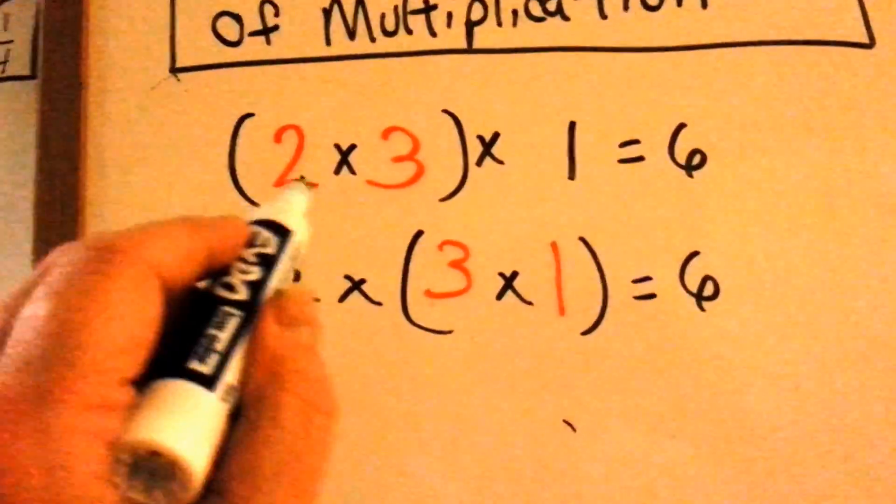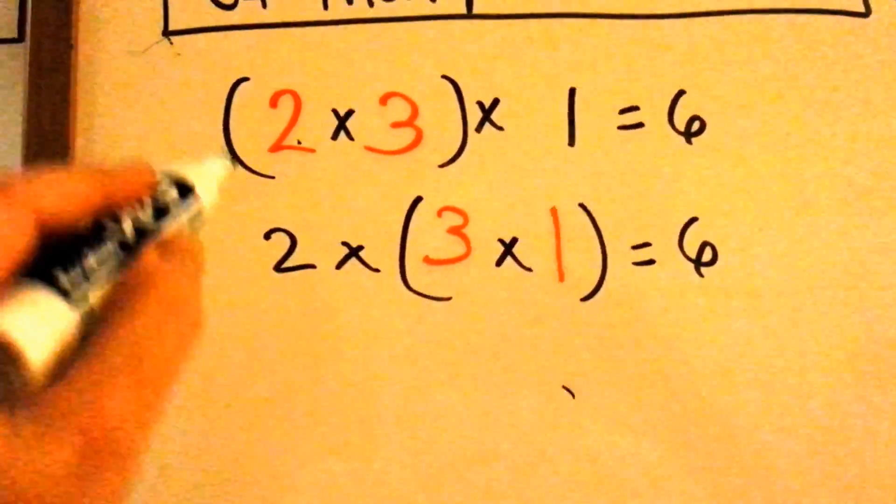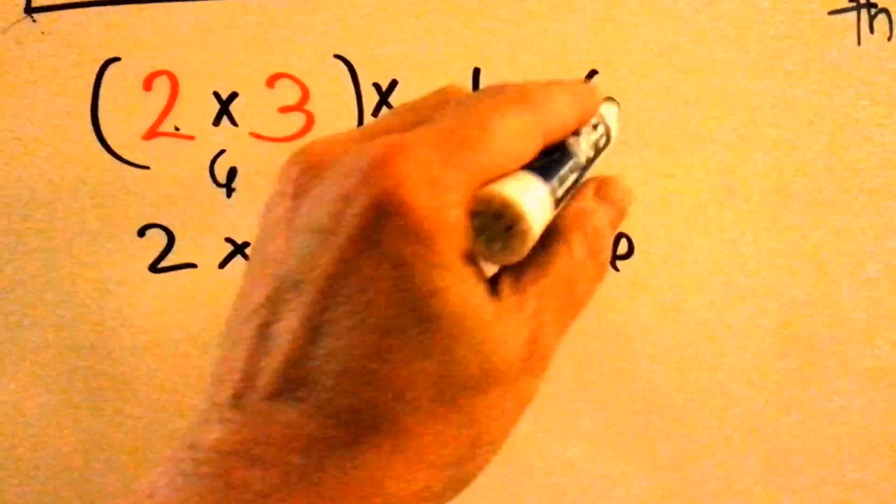In this first one, we've got 2 × (3 × 1). Two times three is six. Six times one is six.